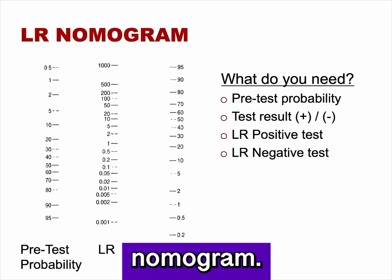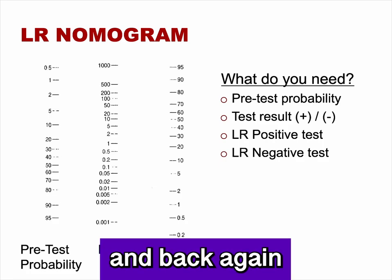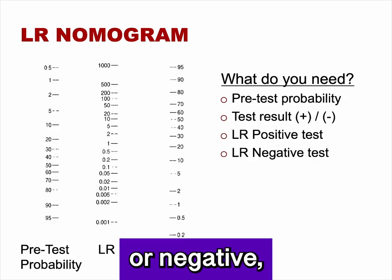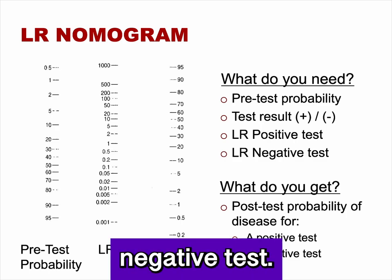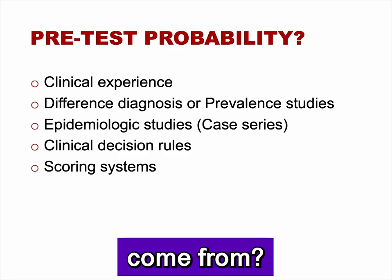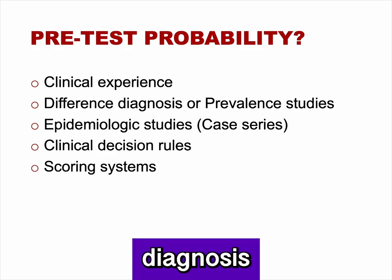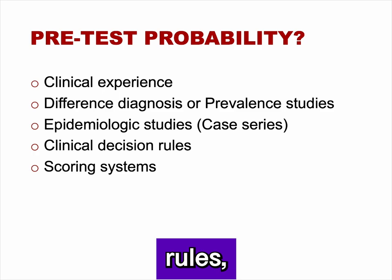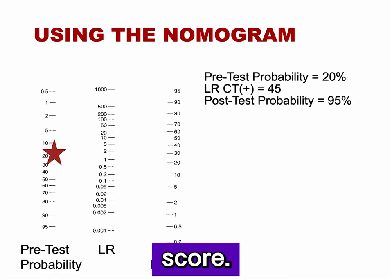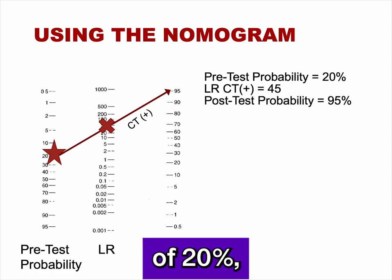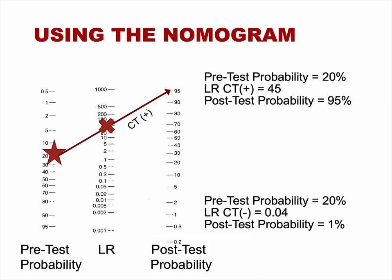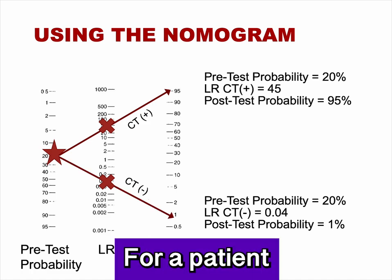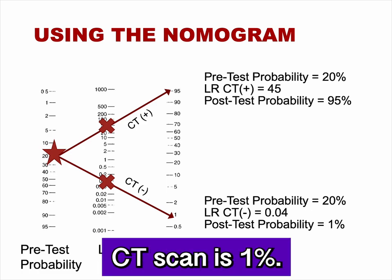This is the Fagan likelihood ratio nomograph. It completes the process of converting probability to odds and back to probability. You start with the pretest probability, the test result (positive or negative), and the likelihood ratios for positive and negative tests. The result is the posttest probability of disease for both outcomes. For a patient with a 20% pretest probability, a likelihood ratio of a positive test of 45 gives a posttest probability of 95%, and a likelihood ratio of a negative test of 0.04 gives a posttest probability of 1%.